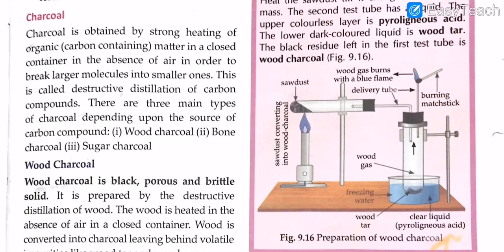Charcoal is obtained by strong heating of organic carbon-containing matter in a closed container in the absence of air. When heated in the absence of air, this process is called destructive distillation — breaking larger molecules into smaller ones. This is the destructive distillation of carbon compounds.